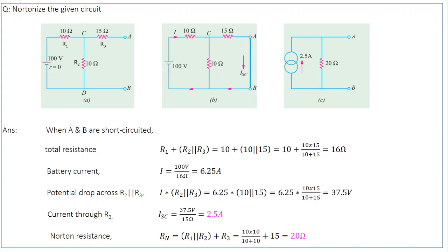To calculate that current, first find the total resistance. R2 and R3 share two common points, so they are in parallel, and this parallel combination is in series with R1. Net resistance = R1 + (R2 ∥ R3). Plugging in values: total resistance = 16 Ω. Total current from the battery = 100 V / 16 Ω = 6.25 A. In a series connection, current remains the same, so 6.25 A flows through R1 and through the R2 ∥ R3 combination.